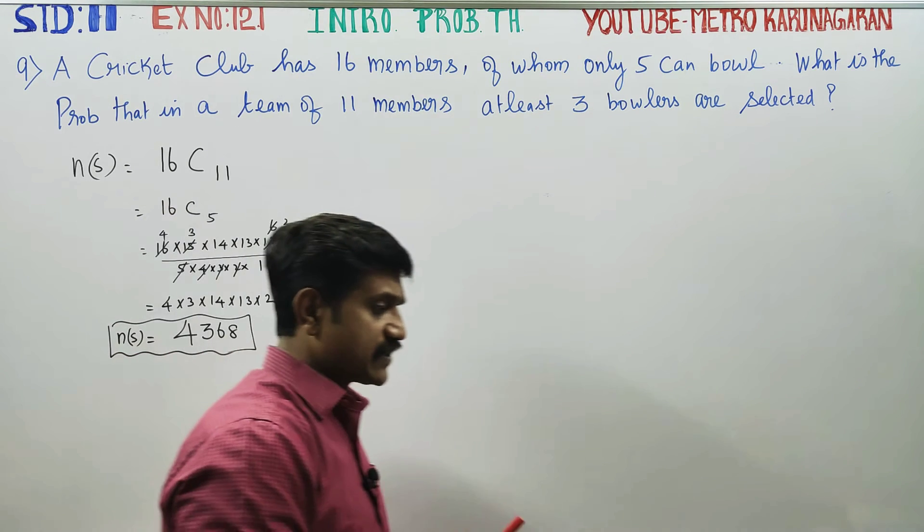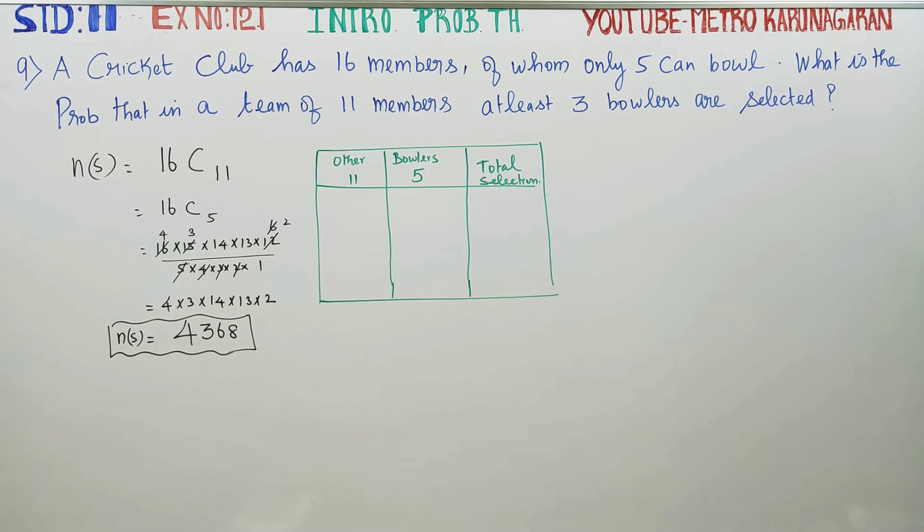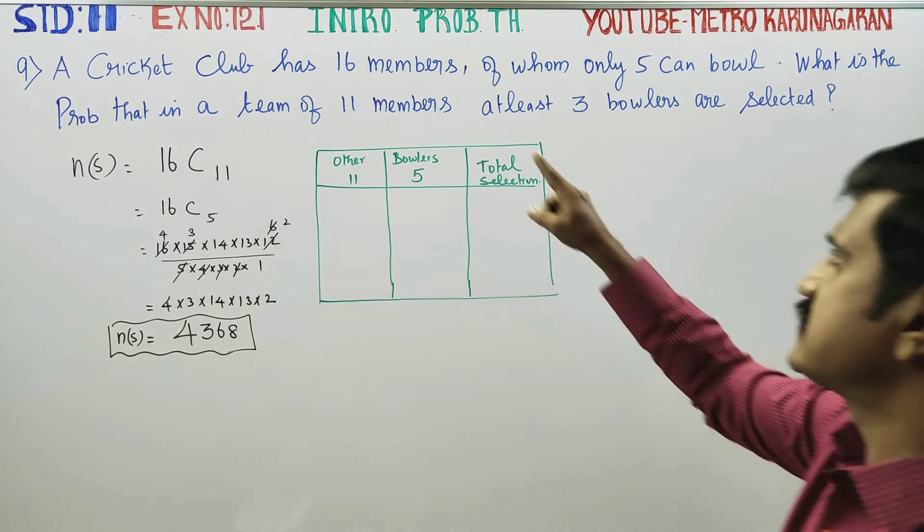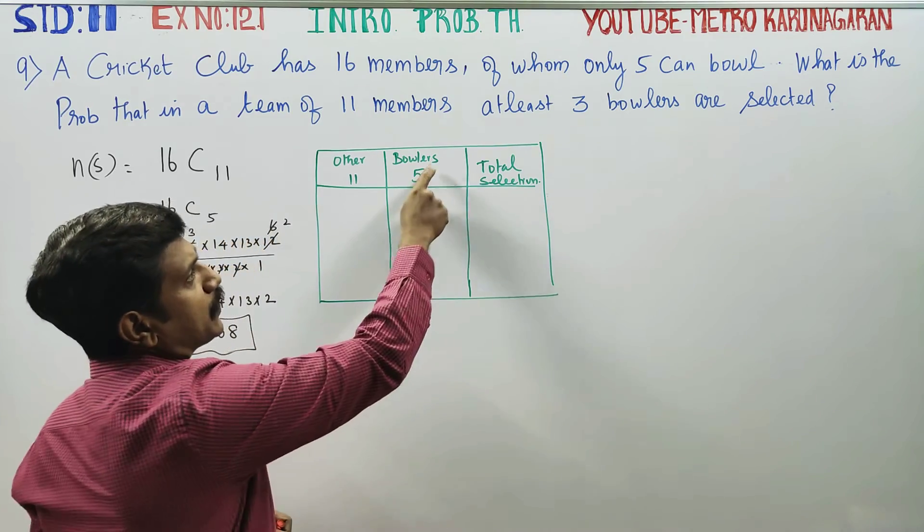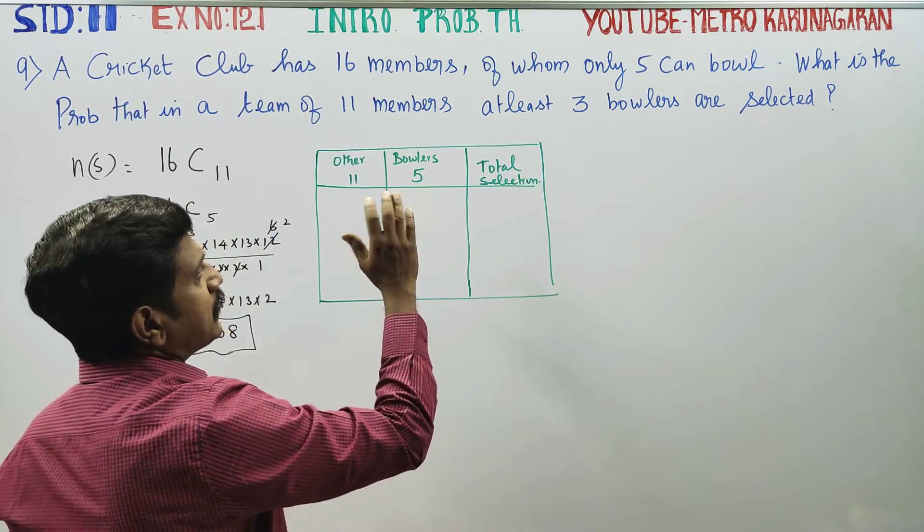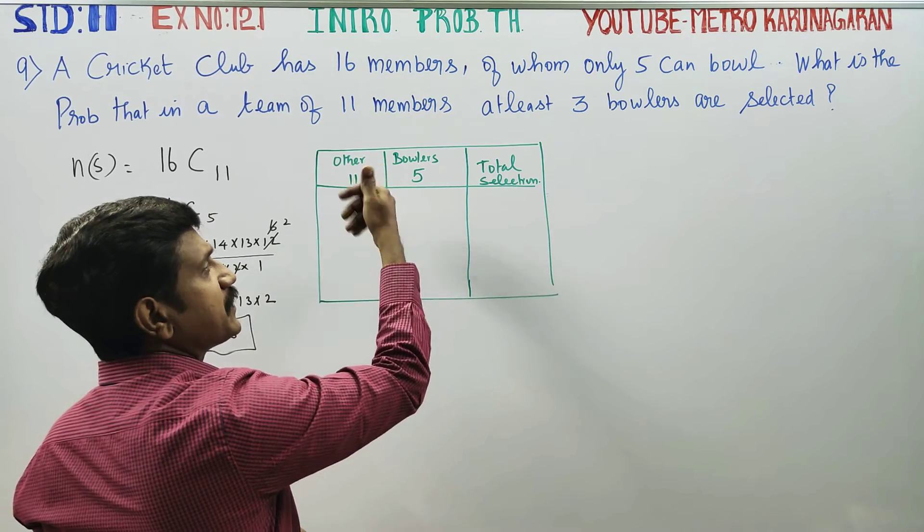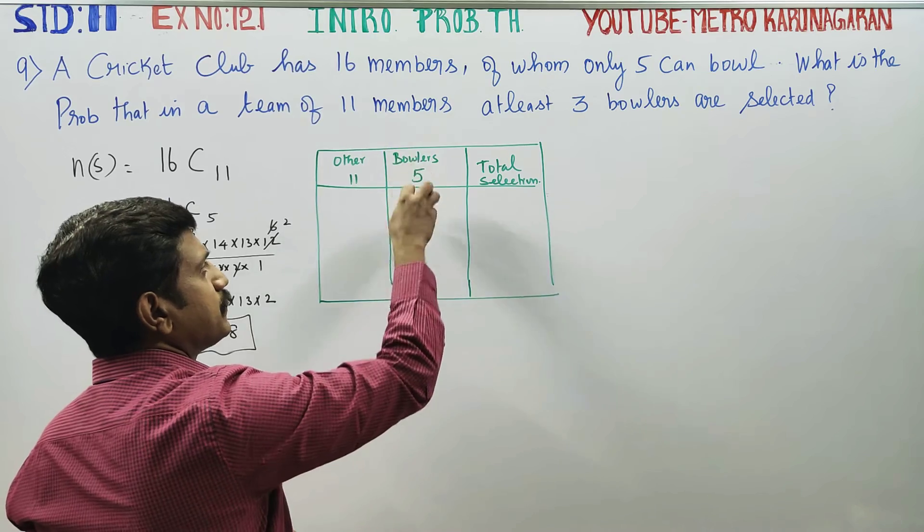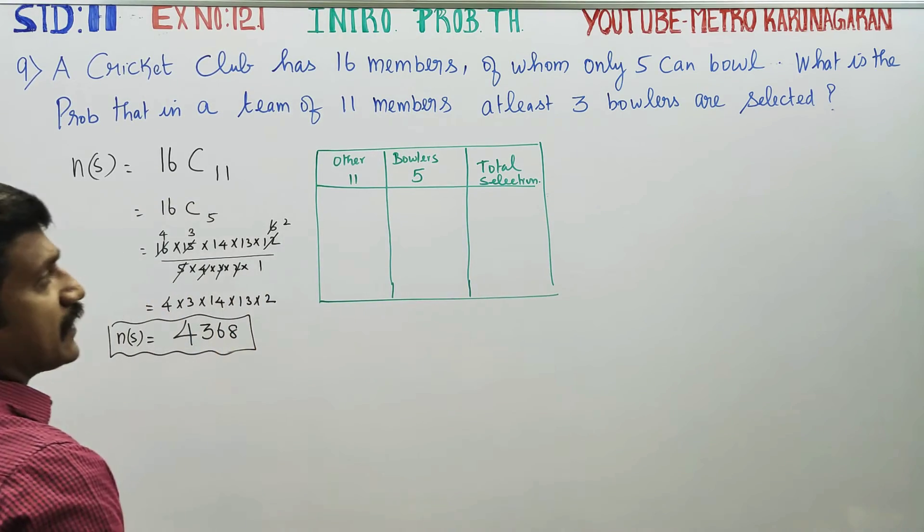Now you have 3 bowlers and the wording is at least 3 bowlers. Now we shall select the bowlers. In total, we have 16 players. In 16 players, 5 players only can bowl. In the remaining, there are batsmen, wicket keepers, all-rounder fielders etc.